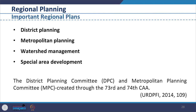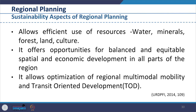Considering the importance of regional planning at the district level and with the view to integrate urban and regional development, the District Planning Committee and Metropolitan Planning Committee were created through the 73rd and 74th Constitutional Amendment Act. It is argued that regional planning will lead to sustainability and allow efficient use of resources such as water, mineral, forest, land and culture, if we plan the region in a comprehensive manner.